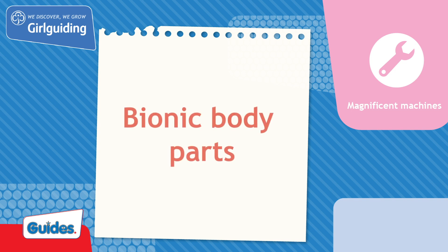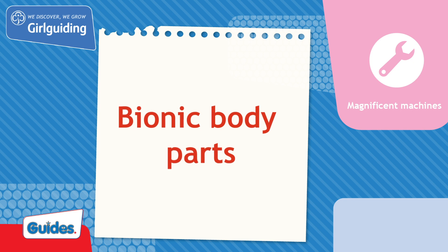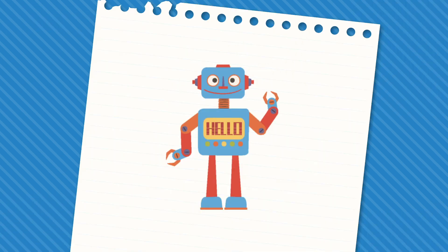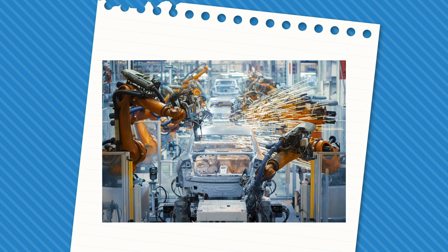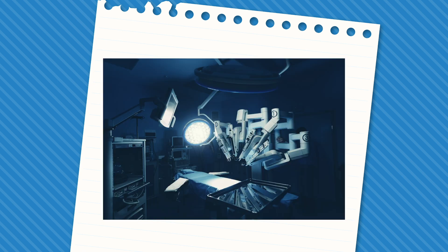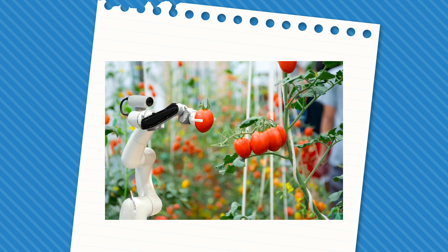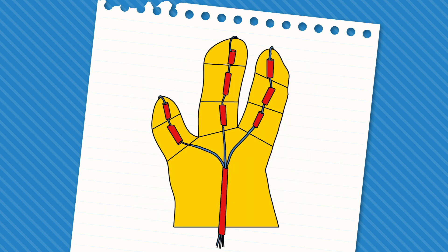Today we'll be doing a unit meeting activity called Bionic Body Parts from the topic Magnificent Machines. Robots do all kinds of jobs for us, from vacuuming to building cars and performing surgery, but one of the hardest things is to get them to mimic human movement. Let's build our own bionic hand to see how difficult but incredible it is.